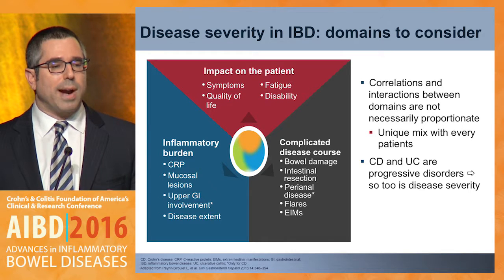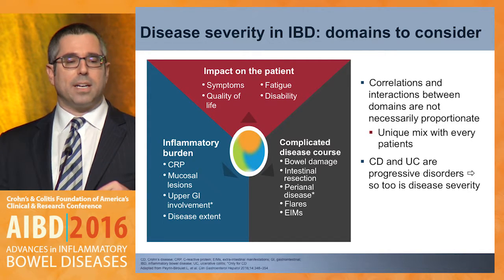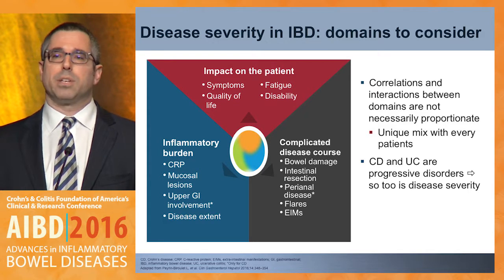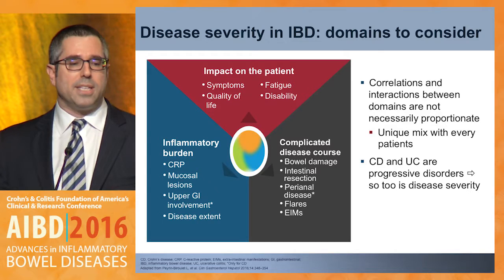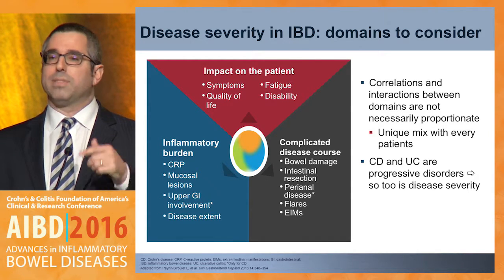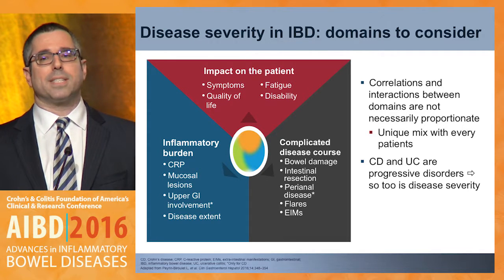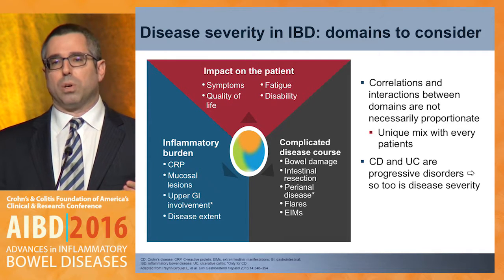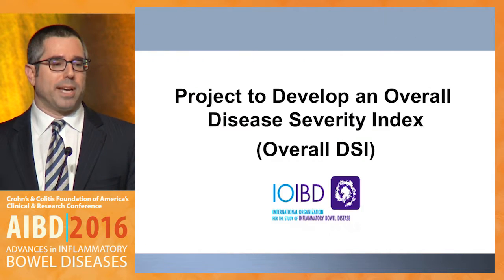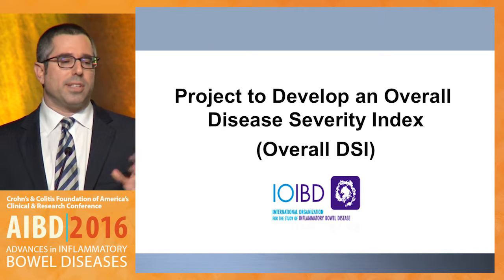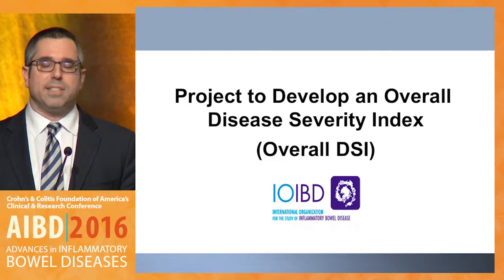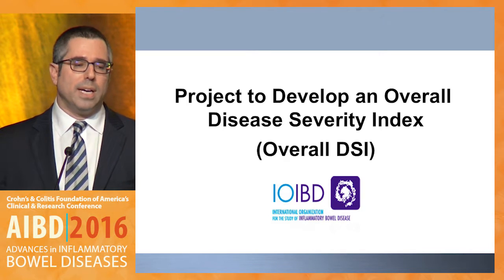Although there are correlations and interactions between these domains, they don't necessarily need to be proportionate. There's a unique mix of what every patient brings from these domains to really help define their overall disease severity. We need to remember that both Crohn's disease and ulcerative colitis aren't just progressive disorders — their disease severity will also progress if we let their disease get out of control and don't prevent complications from occurring, as opposed to just trying to treat those complications after they occur. This thought process led to the project to develop an overall disease severity index known as the overall DSI.